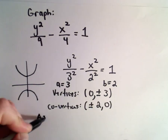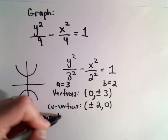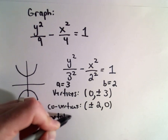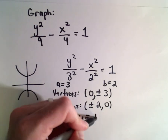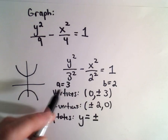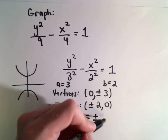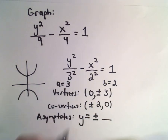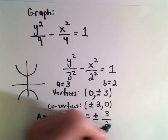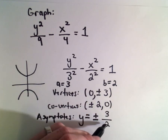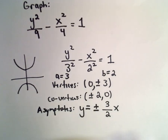To get the asymptotes, the asymptotes are at y equals ±(a divided by b) multiplied by x. So here we'll have y equals ±(3/2)x.